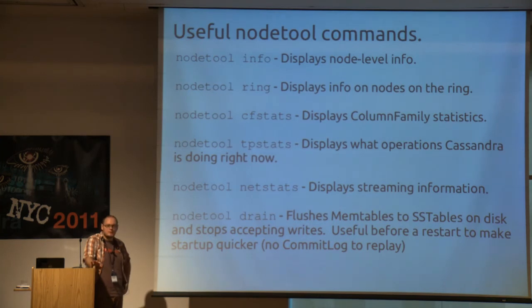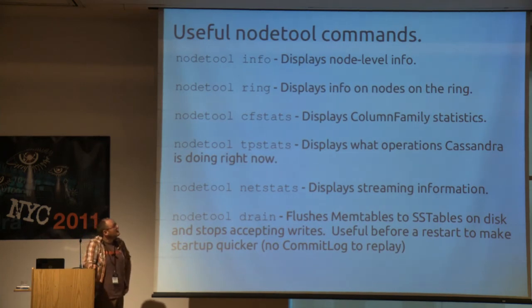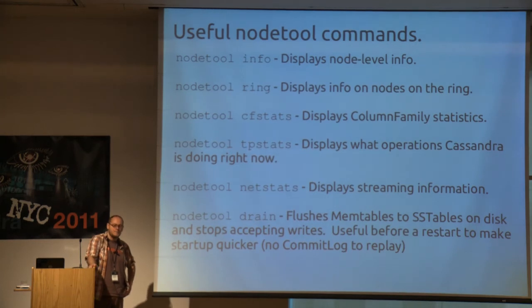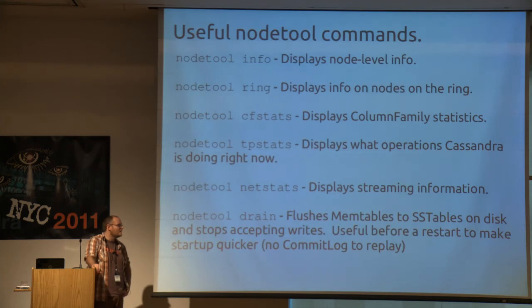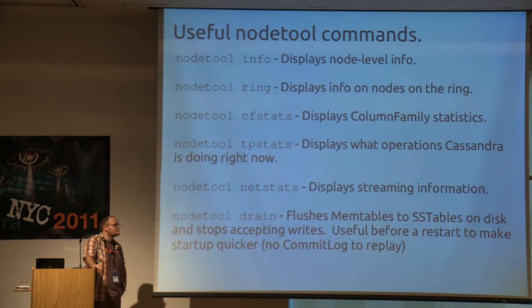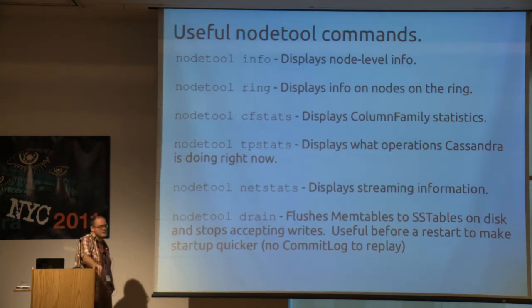Common command-line tools: nodetool info shows local info; nodetool ring shows information about the cluster as a whole; cfstats shows column family stats; tpstats shows thread pool stats. Nodetool netstats shows what SSTables are streaming between nodes during a repair. Nodetool drain flushes MemTables to SSTables on disk and then stops accepting writes — it kind of turns the node off and flushes everything to disk, which makes shutdowns nicer because you don't have to read the commit log when you come back up.